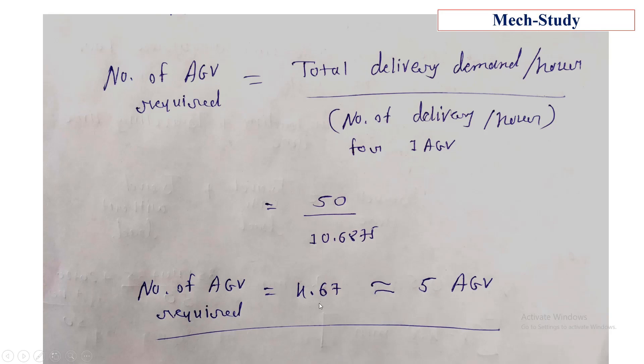Substituting this value, we get that the number of AGVs required is 4.67. So we can say that 5 AGVs are required.